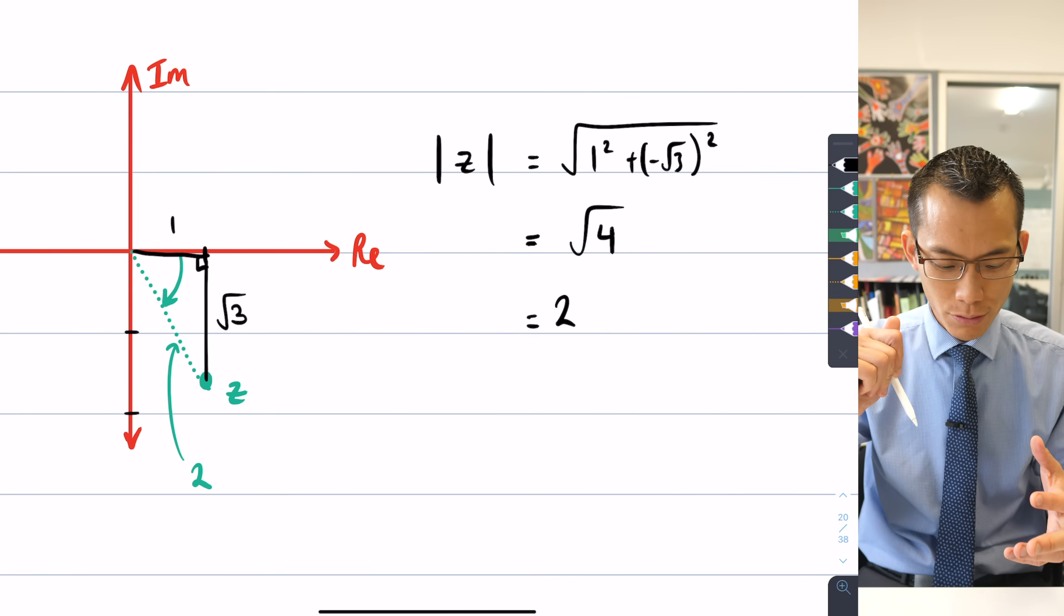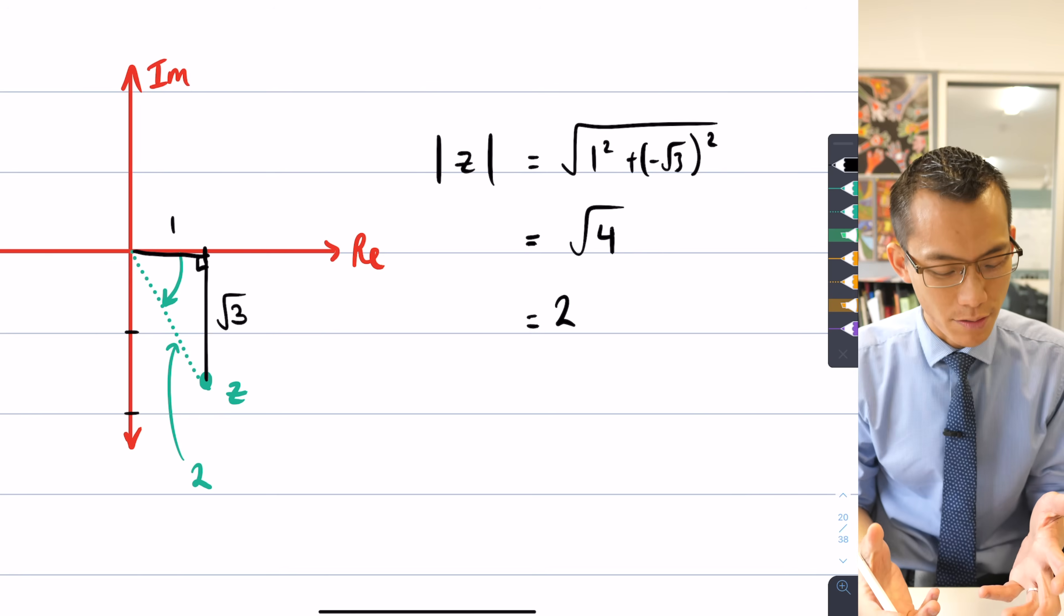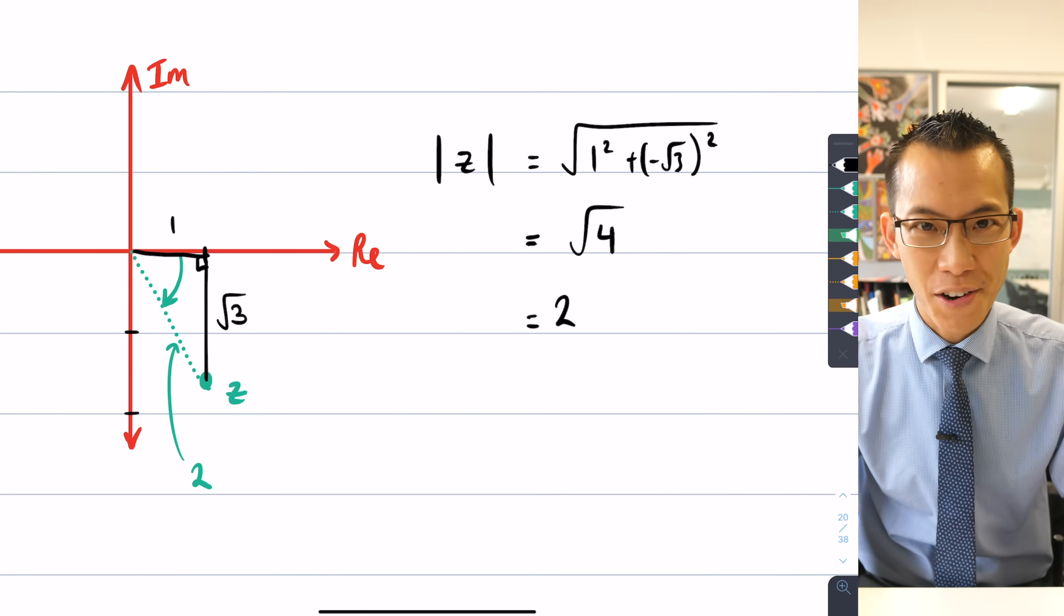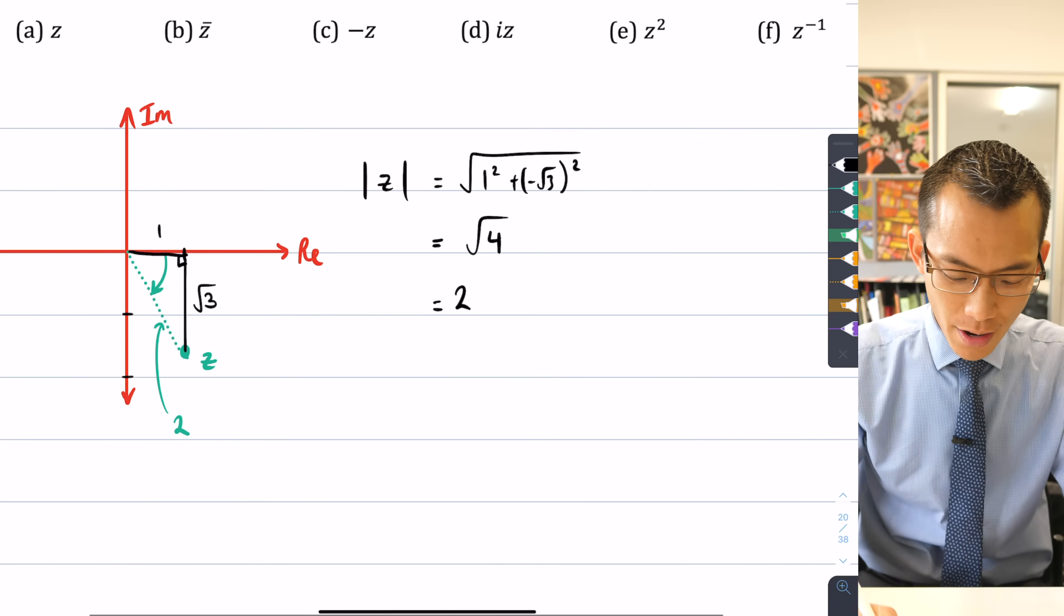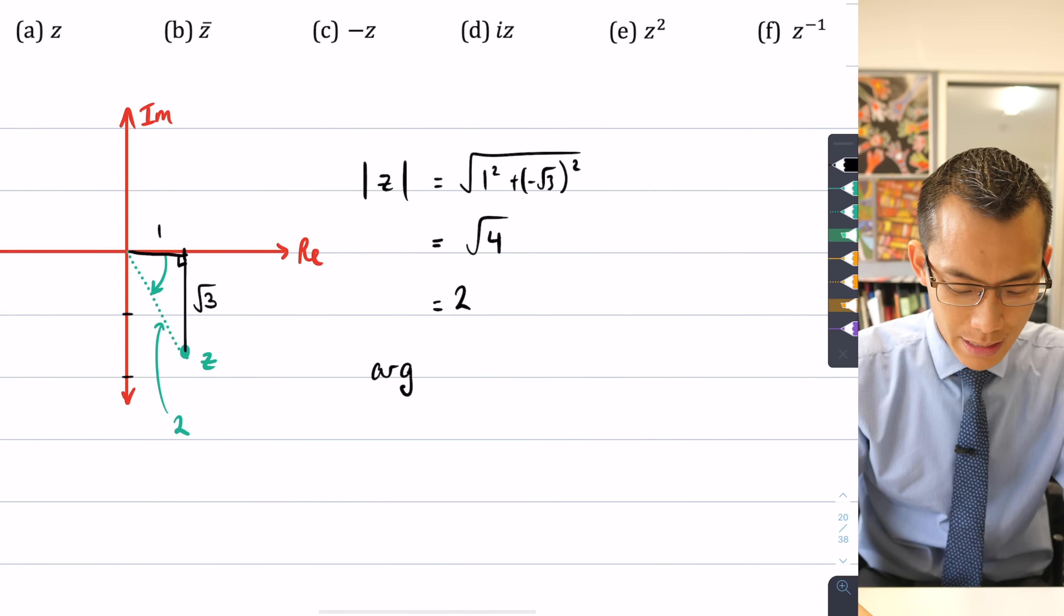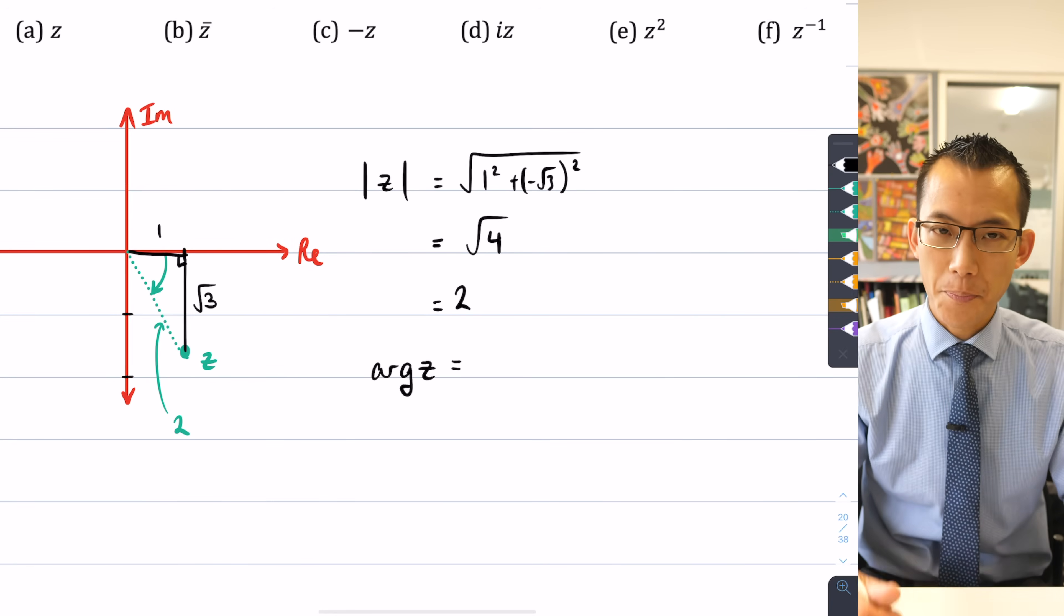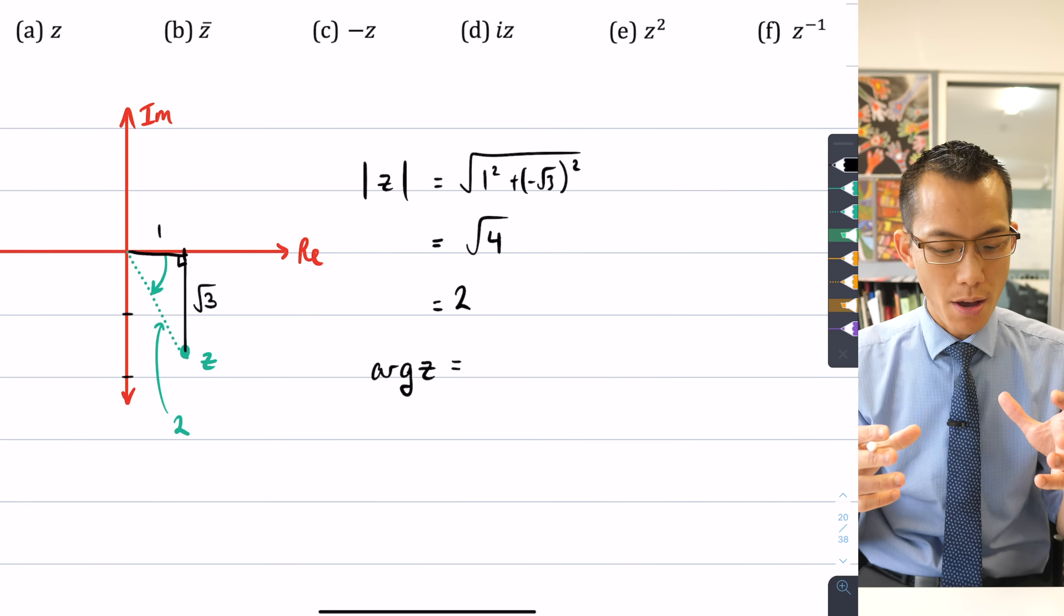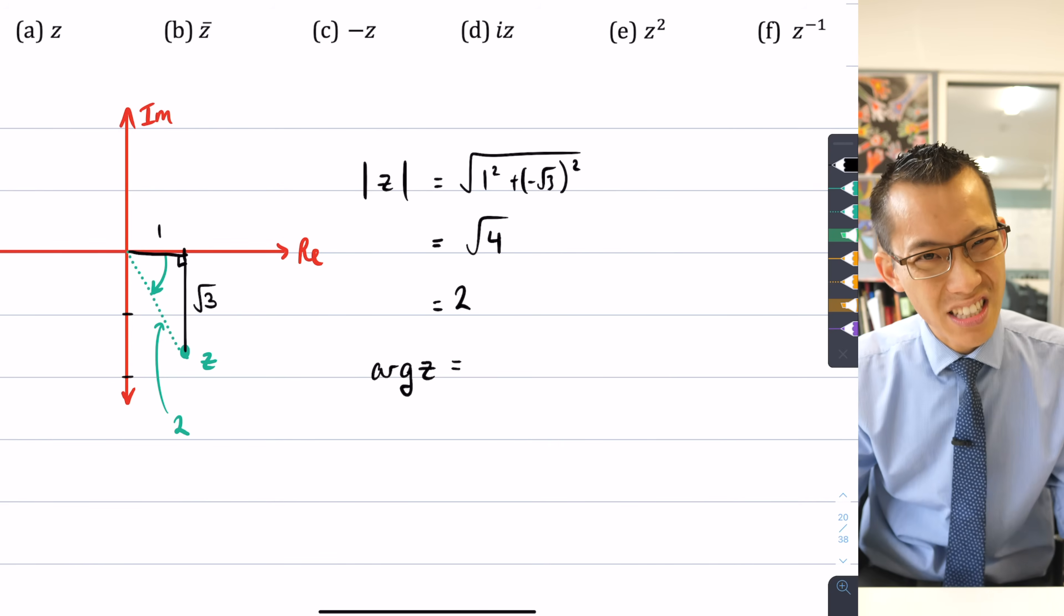This is just the one root three, two triangle in our standard triangles. So in fact, hopefully you can see and you know your exact values sufficiently to say that angle is size π/3, 60 degrees, right? You can even see this must be the 30, this must be the 60, this must be the 90.